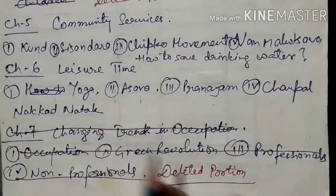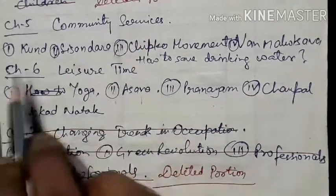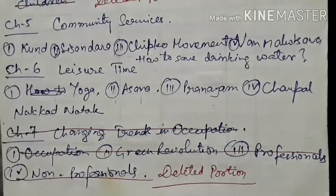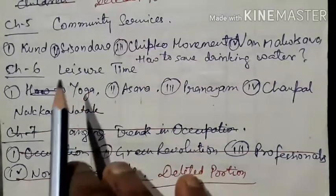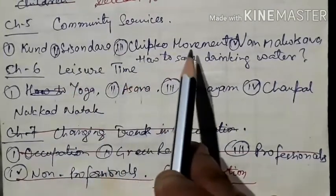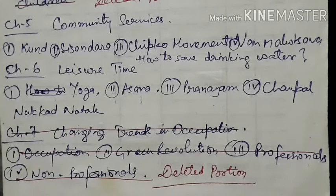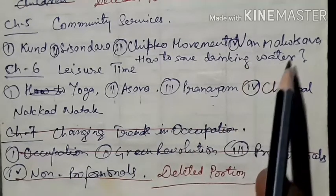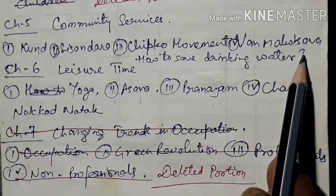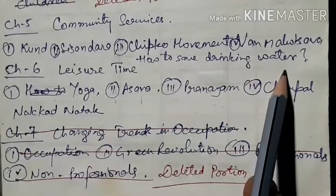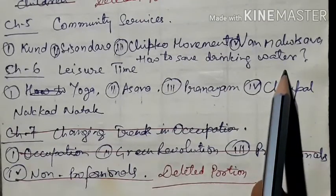Chapter number five and six. Chapter five is community services. Kund — it was also known as a well, or kuwa. See sandras — big pond. Chipko movement — it is a movement which was run in olden times to protect the forest area. Next is tree plantation, and also how to save drinking water by rain water harvesting method.